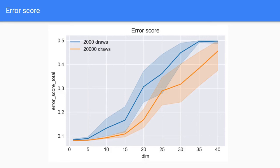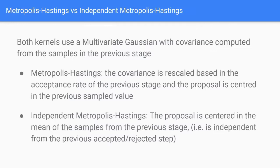The results shown here were obtained using the Metropolis-Hastings kernel. In the next slides we'll compare this kernel with the recently implemented independent Metropolis-Hastings. For the proposal, both of these kernels use a multivariate Gaussian with the covariance computed from the samples in the previous stage. The difference is that for Metropolis-Hastings the covariance is rescaled based on the acceptance rate of the previous stage, and the proposal is centered on the previous sample value, whereas for independent Metropolis-Hastings the proposal is centered in the mean of the samples from the previous stage.